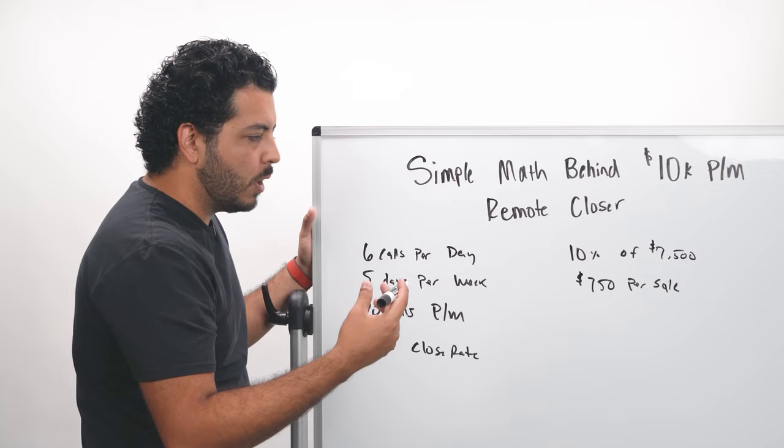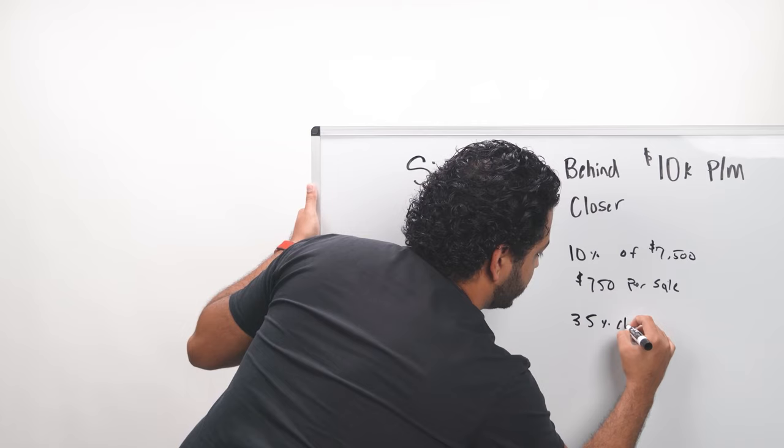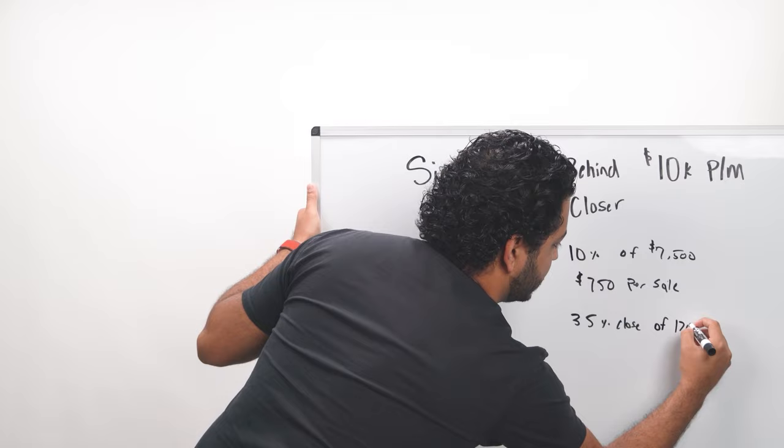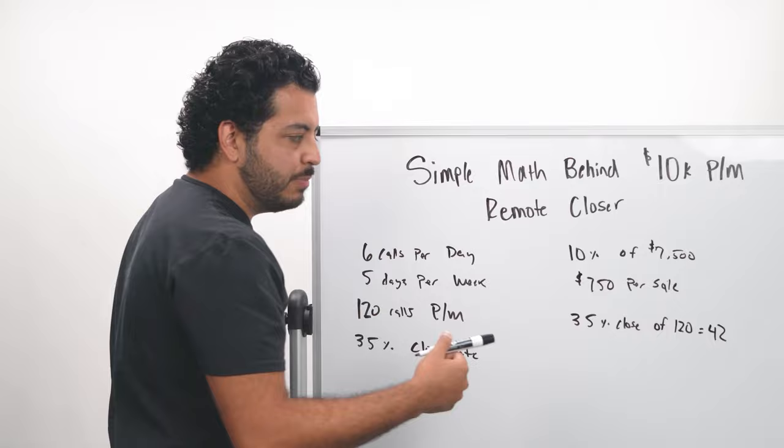But again, remember, because you're closing at 35% close rate, so 35% of the 120 calls that you took, right? 20% of the hundred calls is going to give you 42 sales. So you're making 42 sales as opposed to, let me just put sales here, you're doing 42 sales instead of the 20 sales, right?